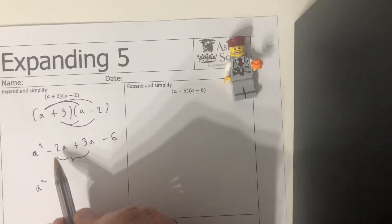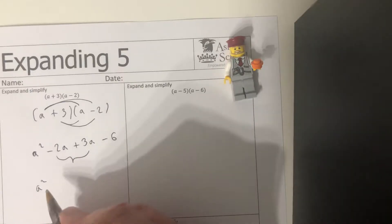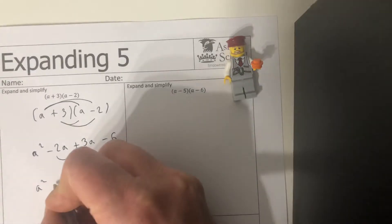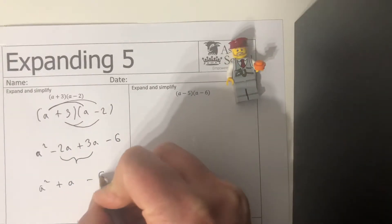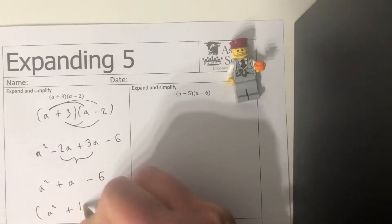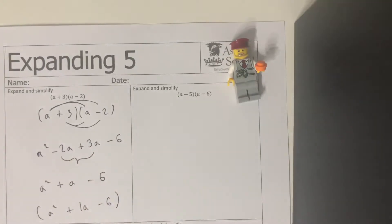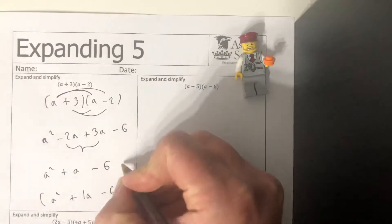Again we've spoken about rearranging things, but minus two a add three a is plus one a. Now plus one a, would I write it down? No, I would just write plus a and then leave it, with minus six at the end. If you wrote this a squared plus one a minus six, it's correct, it's technically correct, but it's just not what's done in maths. You don't need that number one, so that's the one I'm looking for there.